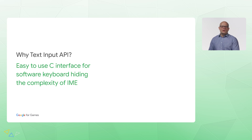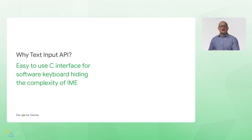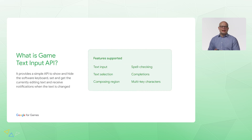It is complicated to write a full-screen Android app in C++ that uses the software keyboard for text input. The typical workaround involves showing and hiding edit text boxes. However, this requires you to handle many edge cases to ensure that this works across different devices, input method editors, and platform changes. GameTextInput provides a simple API to show and hide the software keyboard, set and get the current editing text, and receive notifications when the text is changed.